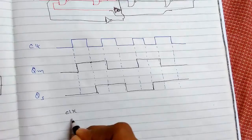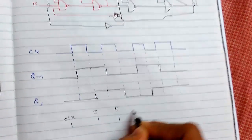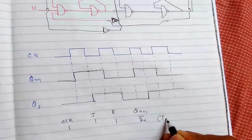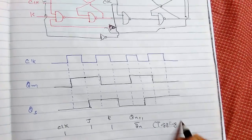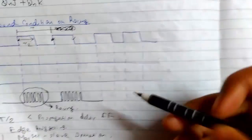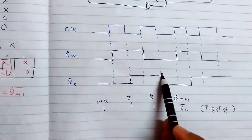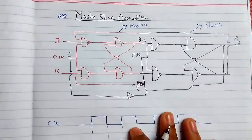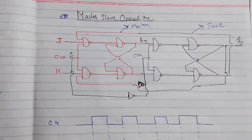The condition is clock one, J one, K one, Q n+1 equals Q n bar. This is our toggling and we have avoided or removed our racing condition. Now it remains one for one complete clock cycle and zero for one complete clock cycle. This was master-slave operation. Thanks for watching.